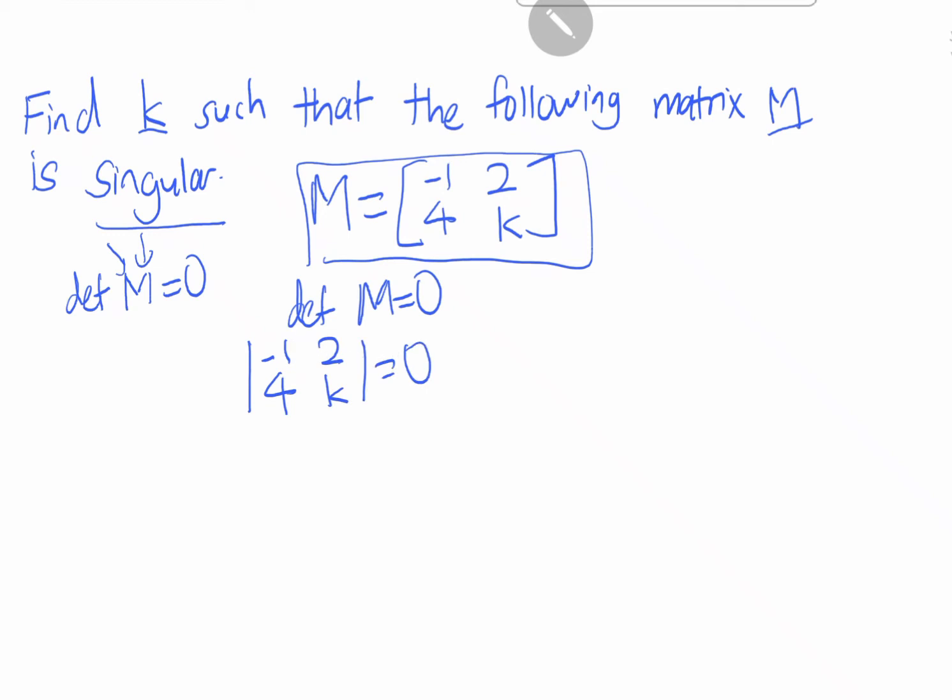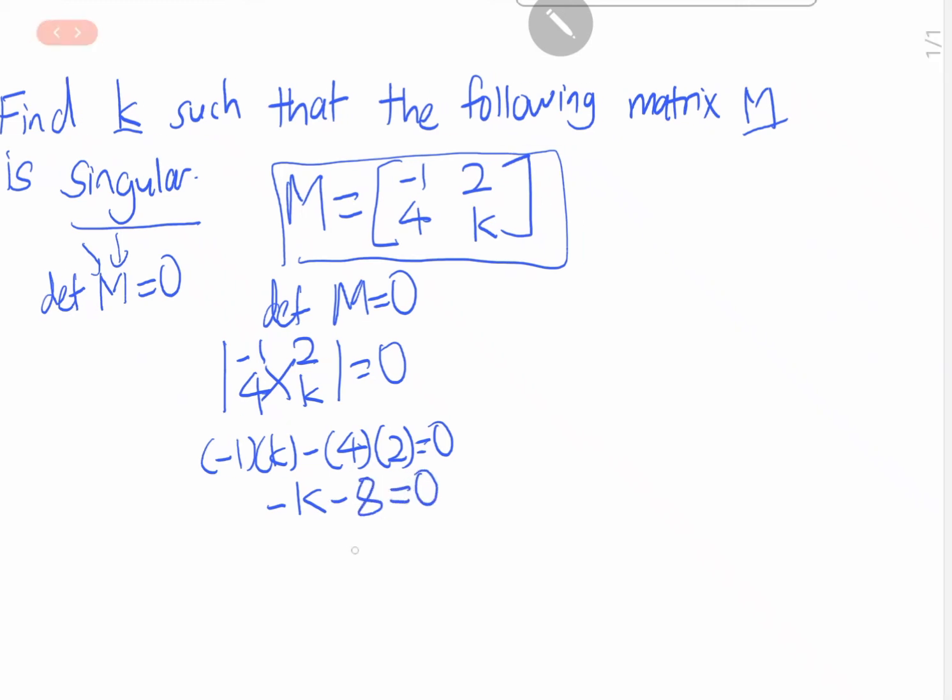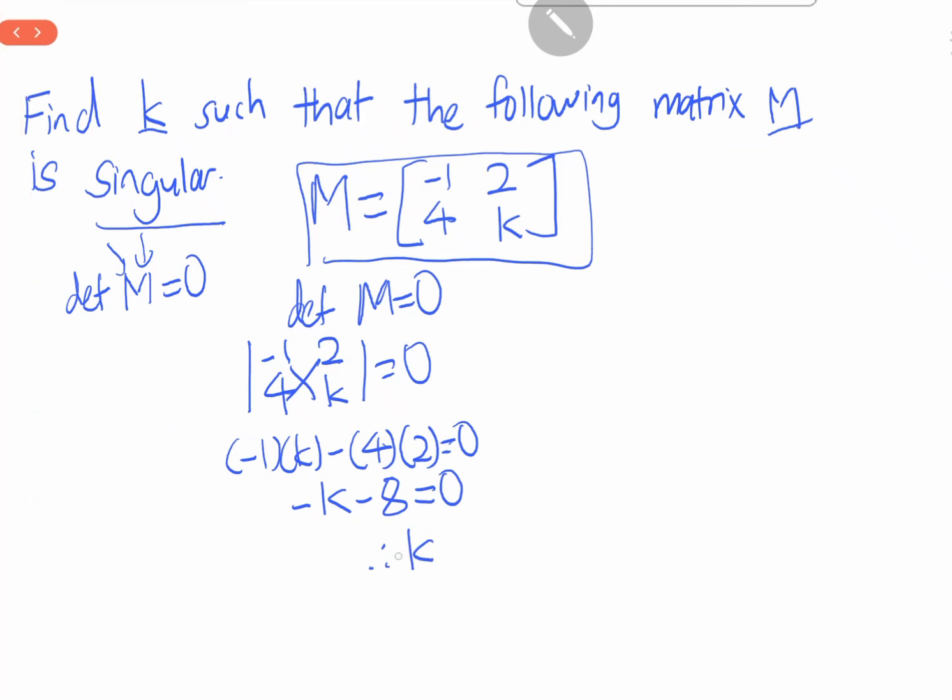So how do we find the determinant of this? It's minus one K, minus 4 times 2, equals to zero. So minus K minus 8 equals to zero. Therefore, K is equals to minus 8.